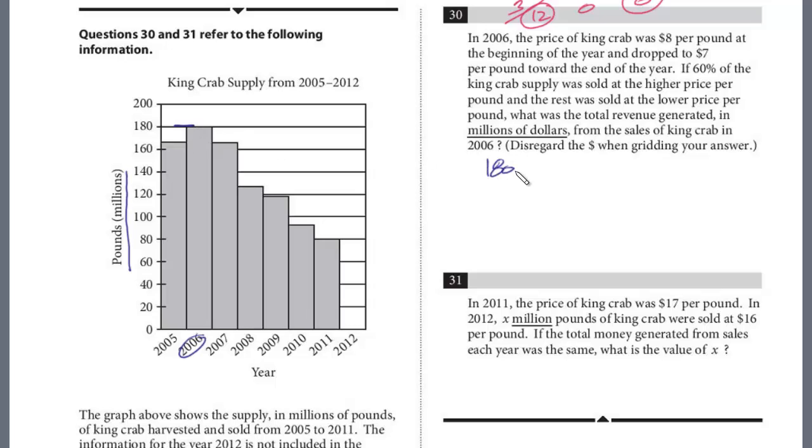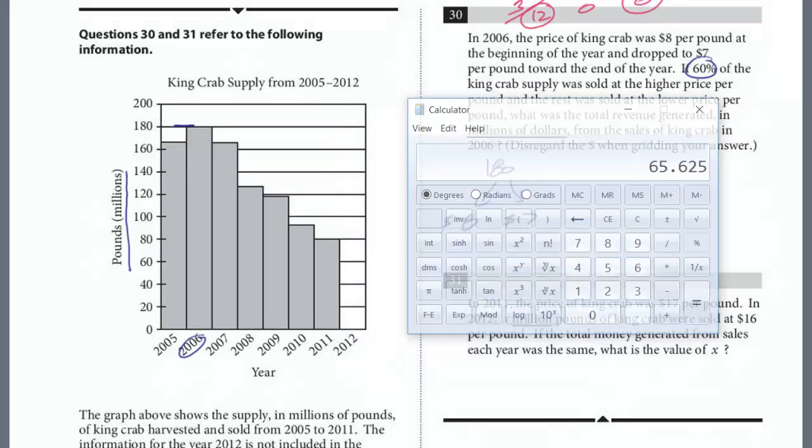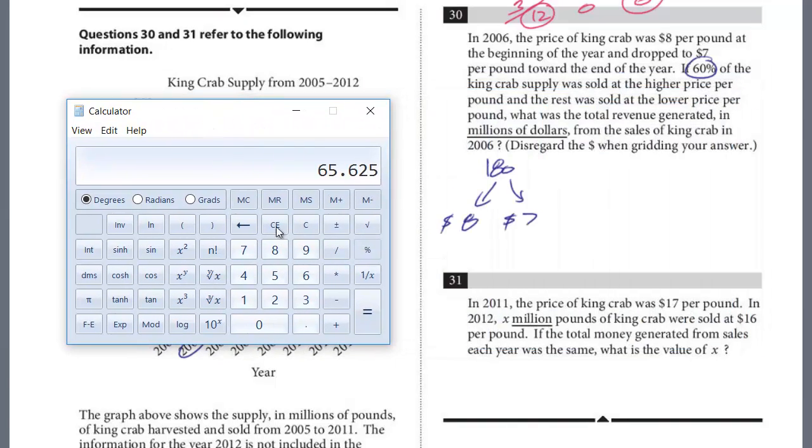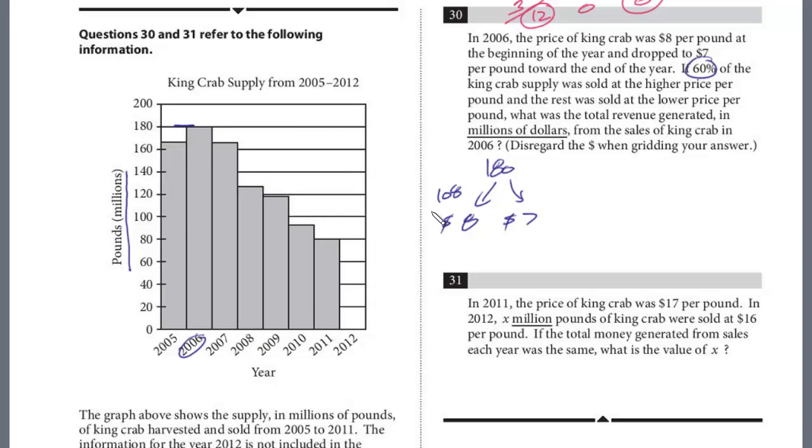But it was split up because the price changed. So part of the price was at $8 a pound and $7. We have to figure out what proportion, and we're given the ratio or the percentage. So 60% of the 180 was sold at $8. We could just use our calculator. We're going to take 60% of 180. So it's going to be 0.6 times 180. This is the amount of pounds, 108, at $8. And the rest, you could just subtract. These have to add up. 40% of 180 is going to be 72.